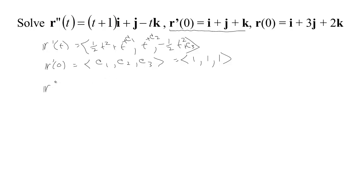So now we have the velocity is 1 half t squared plus t plus 1, and t plus 1, and negative 1 half t squared plus 1. So we found our exact velocity. Now to get our position we need to integrate one more time.